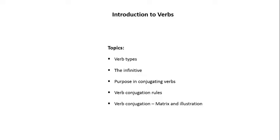I've divided the topic into five areas. The first is we're going to discuss the verb types. Then we'll move into the discussion of the infinitive. Following that will be a discussion on the purpose in conjugating verbs. After that will be the verb conjugation rules. And the last thing will be, regarding verb conjugation, I'll give you a matrix and an illustration.